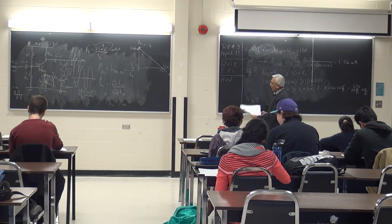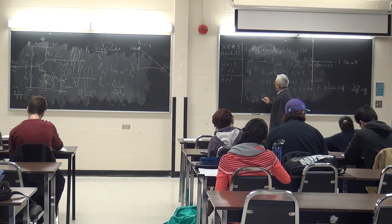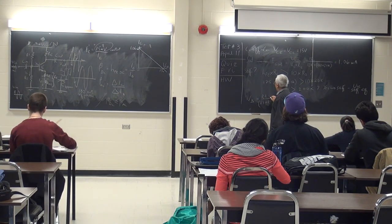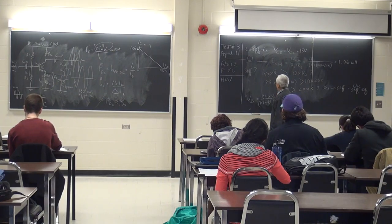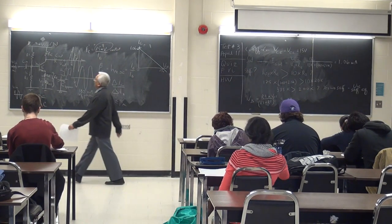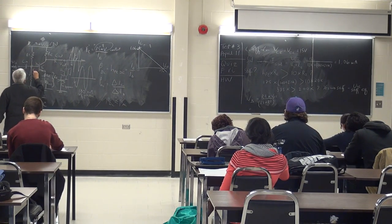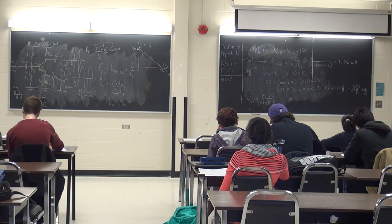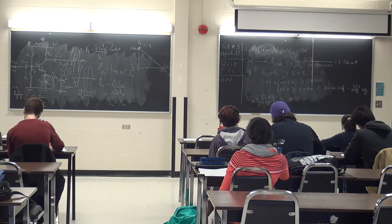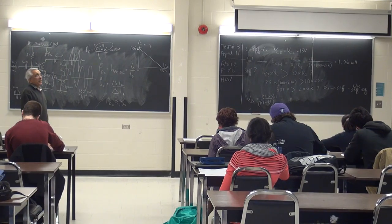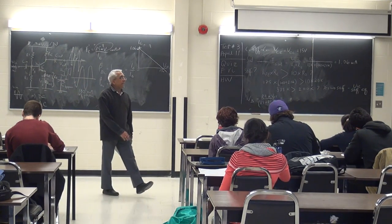That's R2 over R1 plus R2 times VCC. That's VB. Notice that I'm doing DC analysis, so I'm going to use all uppercase. Uppercase B, uppercase C, uppercase E.